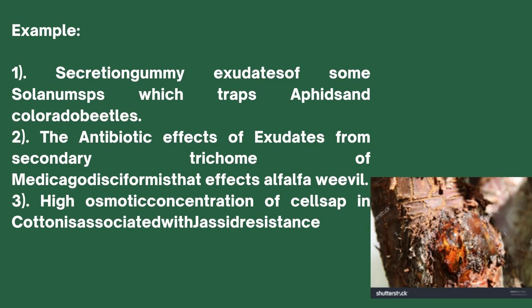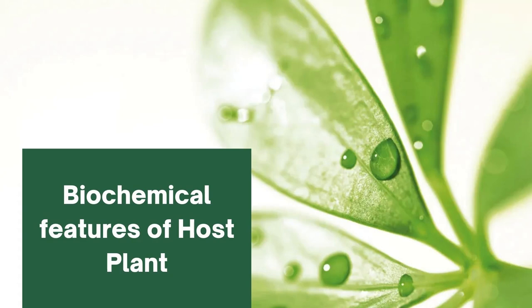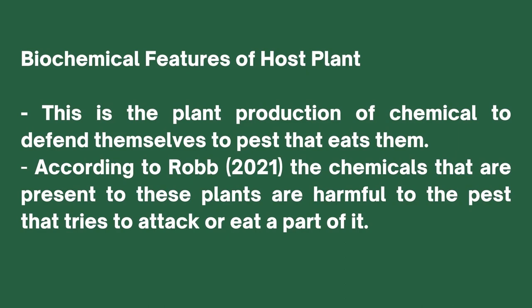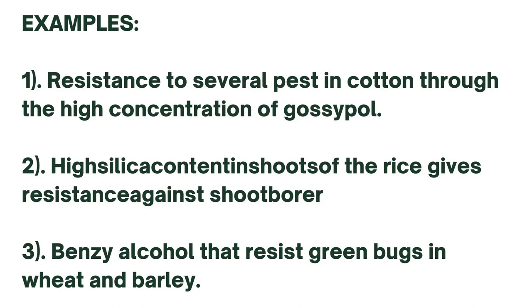The third physiological example is the high osmotic concentration of sap in cotton, which is associated with jassid resistance. Regarding the biochemical basis of resistance, this involves the plant's production of chemicals to defend itself against pests. The chemicals present in these plants are harmful to pests that attack or eat them. Examples include: high concentration of gossypol in cotton conferring resistance to several pests; high silica content in rice shoots giving resistance to shoot borers; and benzene alcohol that resists green bugs.